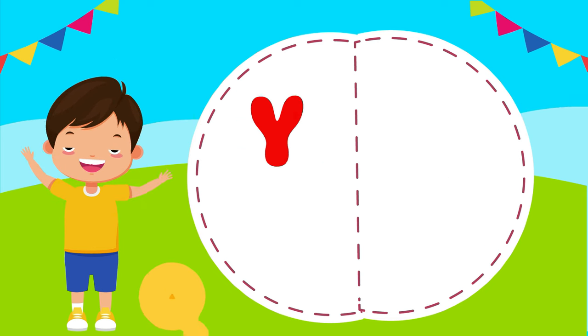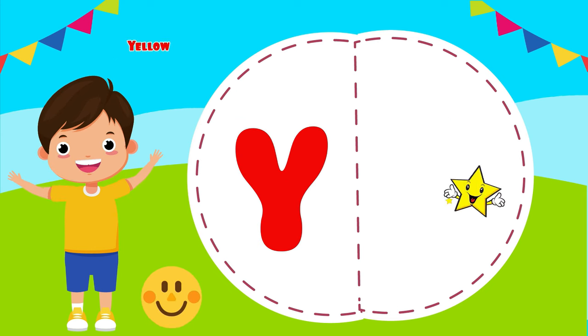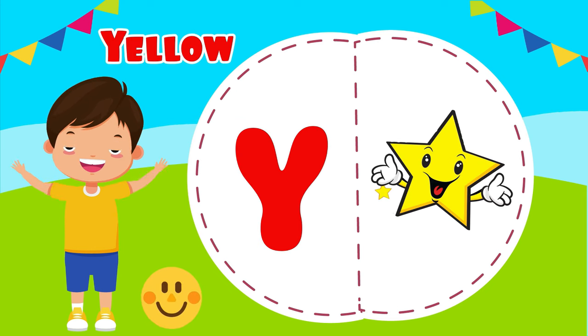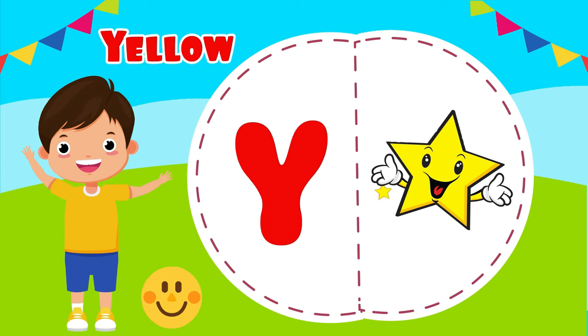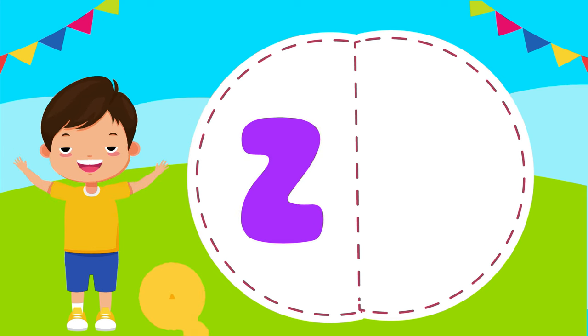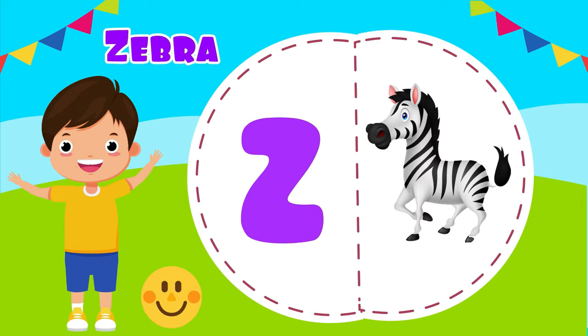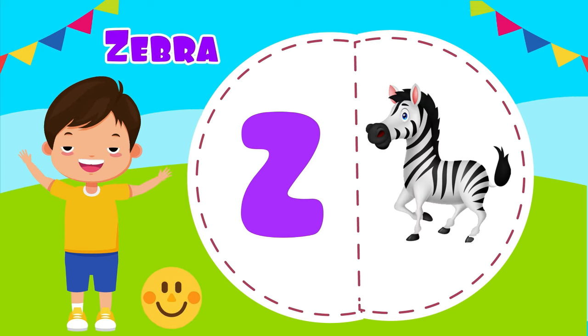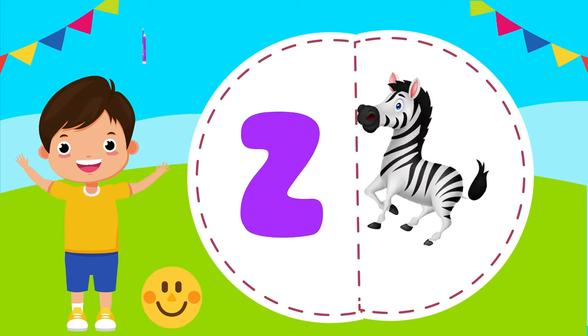Y is for yellow, ye-ye-yellow. Z is for zebra, z-z-zebra.